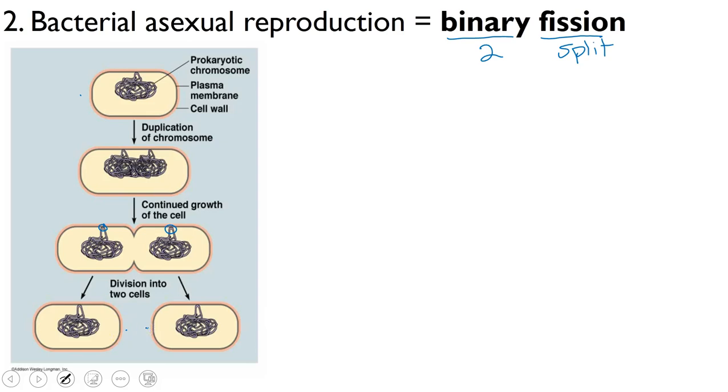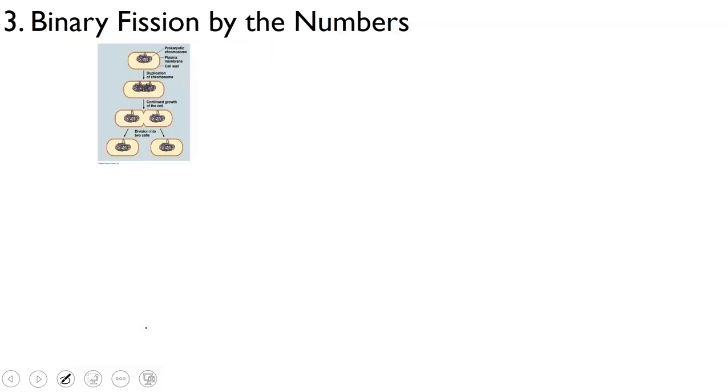No interphase, prophase, metaphase, anaphase, telophase, no spindle fibers, all very simple. Interestingly, this then leads itself to some easy-to-do math to predict how many bacteria we have at any given point. So let's take a look at that.